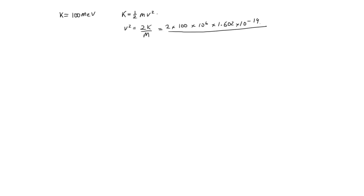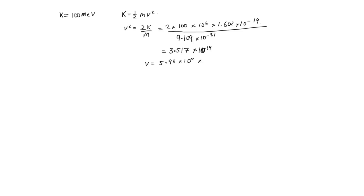Then we divide by the mass. It's an electron, so it has a mass of 9.109 times 10 to the minus 31. Solving this, we get 3.517 times 10 to the 19. This is the velocity squared, so taking the square root, the velocity equals 5.93 times 10 to the 9 meters per second.